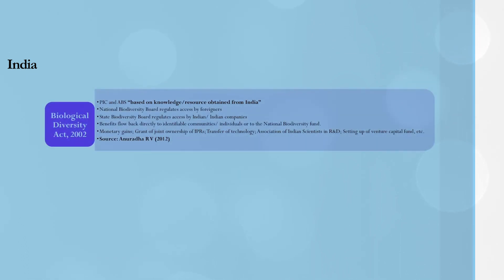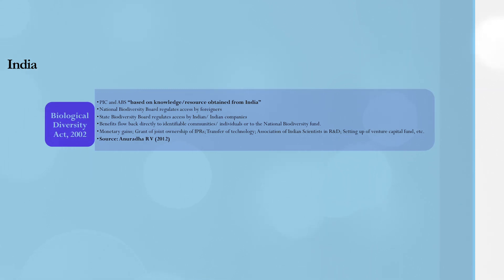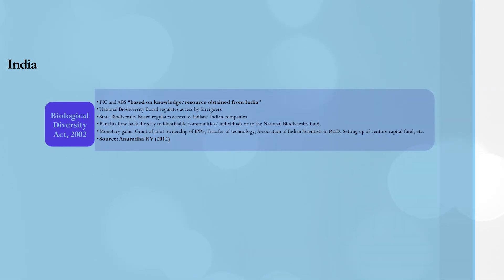The Biological Diversity Act is probably one of the most important acts, legislated in 2002, in relation to protection of biodiversity. Both prior and informed consent and ABS based on knowledge or resources obtained from India is required. The National Biodiversity Board, the federal-level board, governs access by foreigners, and the State Biodiversity Board regulates access by Indians or Indian companies. The benefit that flows may directly go to indigenous communities or individuals, or to the National Biodiversity Fund wherever individuals or indigenous groups are not identifiable.